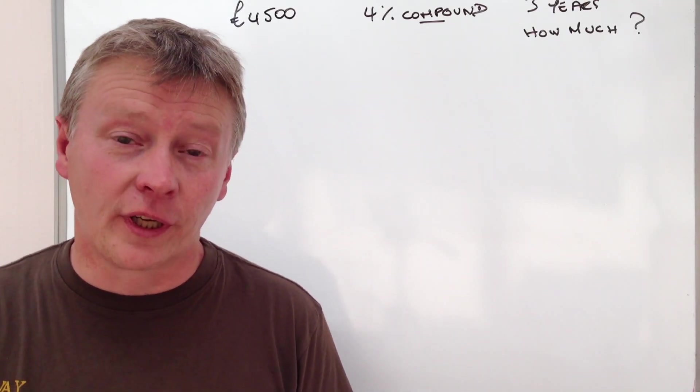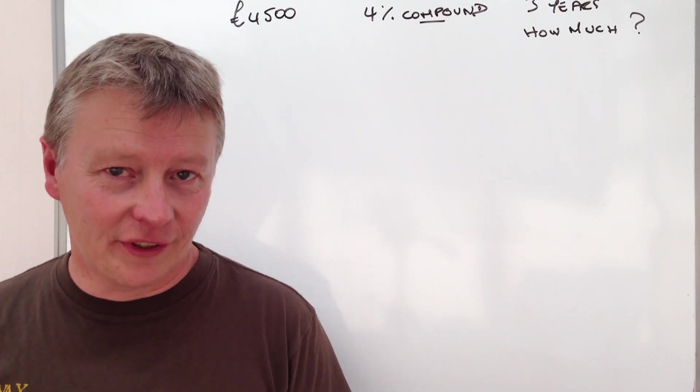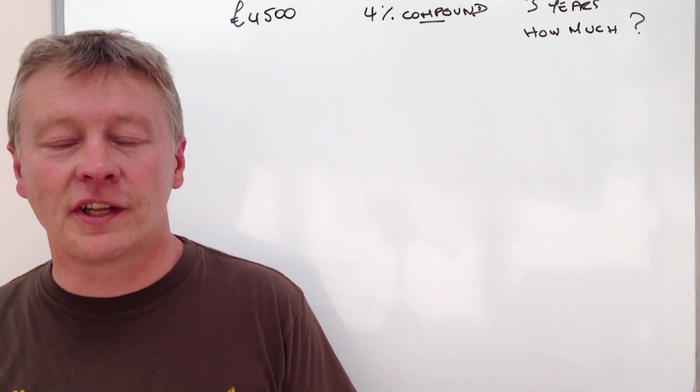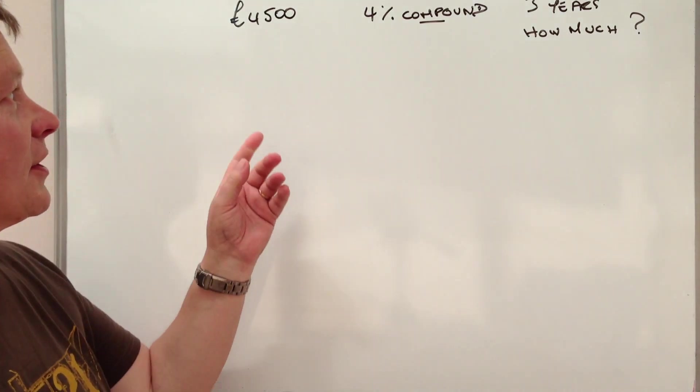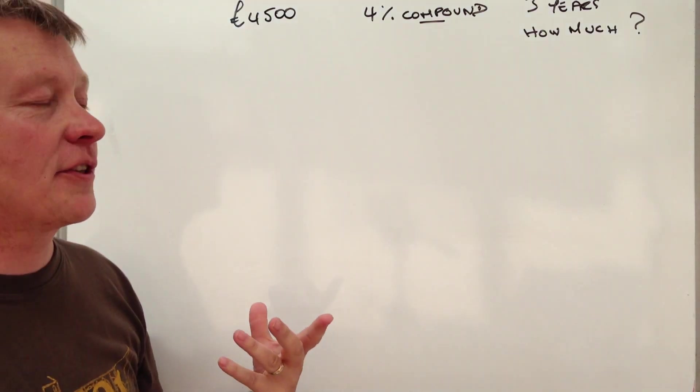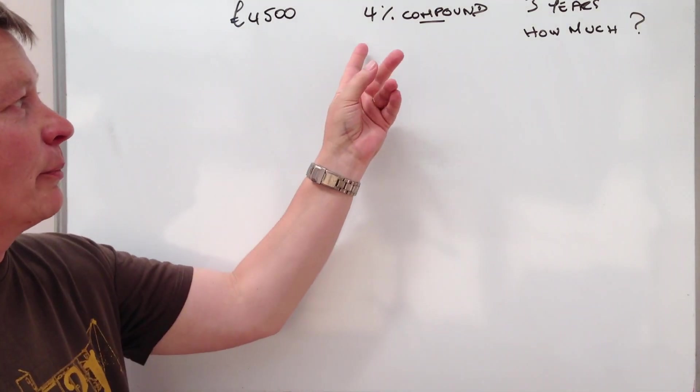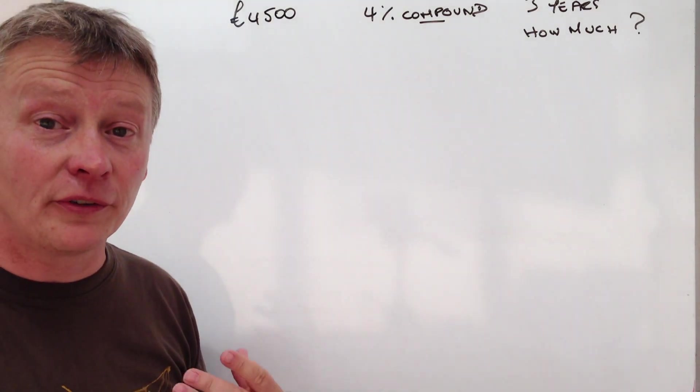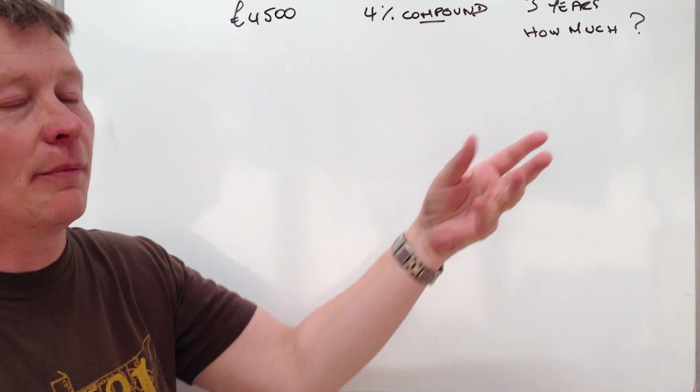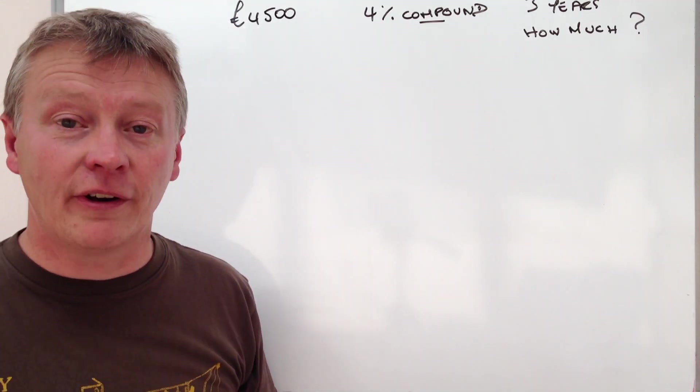Hi, so in this video we're going to start looking at compound interest. This is actually the second video in the series, and in the previous video I looked at this particular question, which was somebody had £4,000, they were going to be paid 4% compound interest, and it's going to go into a bank account for three years. How much would they have at the end of the three year period?